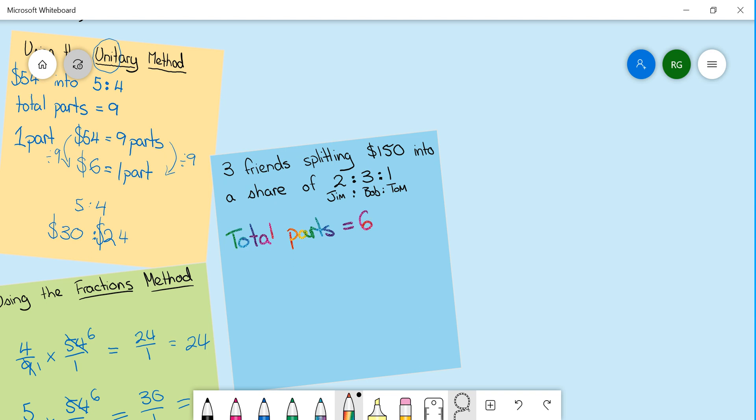We can do it either using the unitary method or the fractions method but if we did the unitary method we would need to divide one hundred and fifty dollars divided by six equals twenty-five dollars. So one part equals twenty-five dollars.